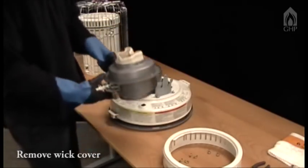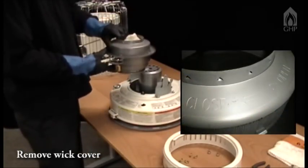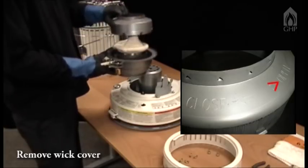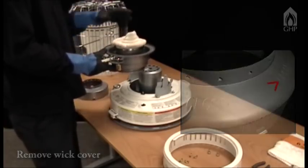Hold the wick assembly upside down. Using caution, grasp the wick cover and turn it counterclockwise to remove it.